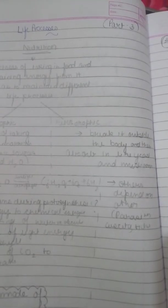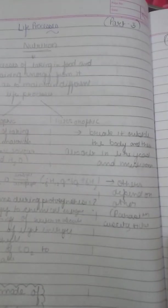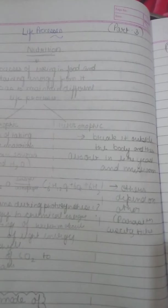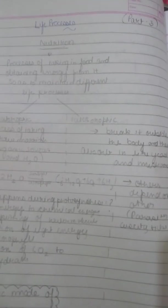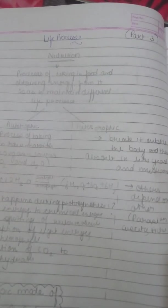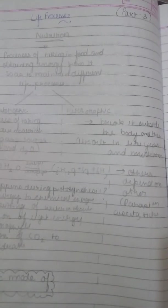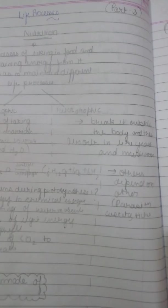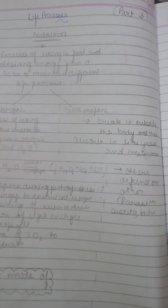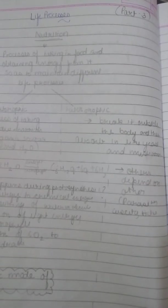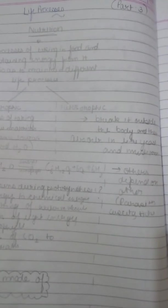In heterotrophic mode of nutrition, there are different strategies. First, breaking it outside the body and then absorbing the food. Those organisms are yeast and mushrooms. Then some organisms depend on other organisms. They call them parasites. They don't give harm to them but they absorb their nutrition. Those are basically cuscuta and ticks. You need to know the examples too.